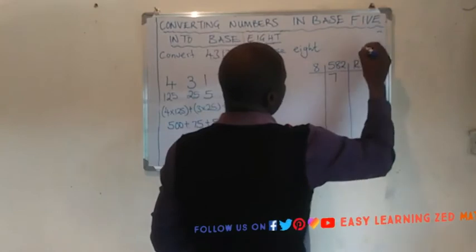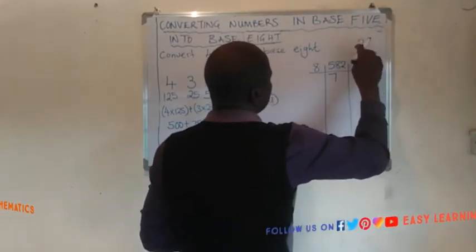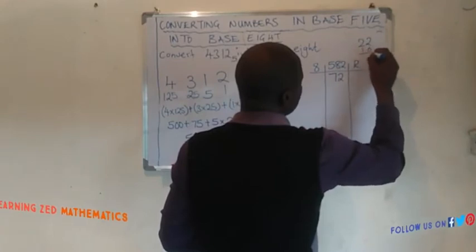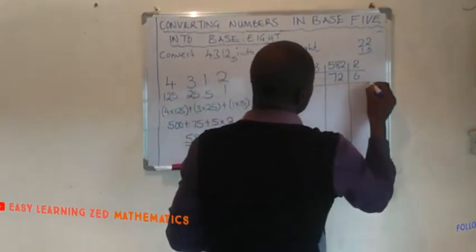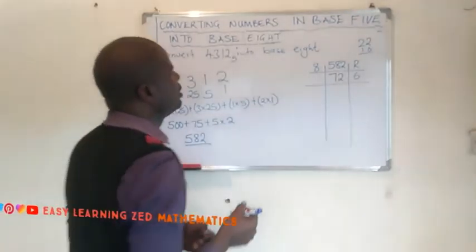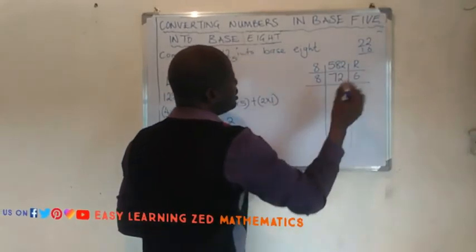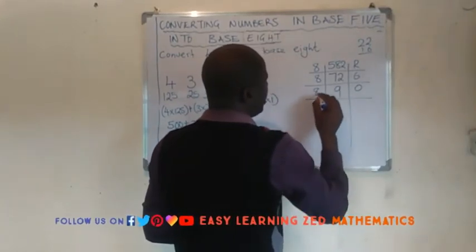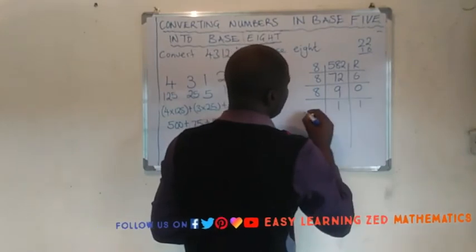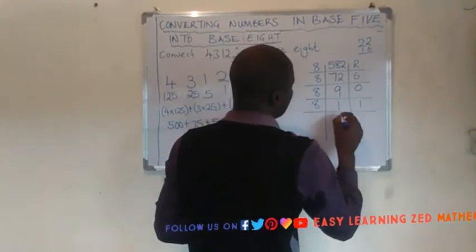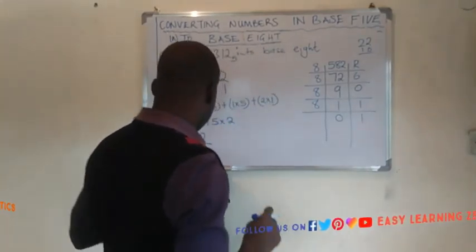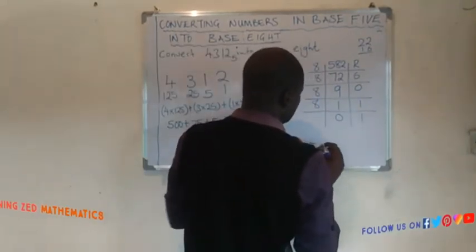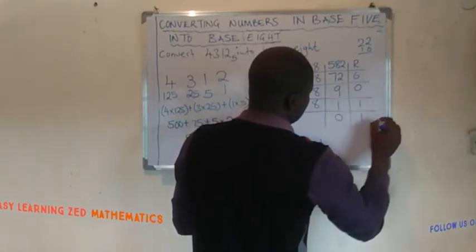8 goes into 582 72 times with remainder 6. Then 8 into 72 goes 9 times with remainder 0. Then 8 into 9 goes 1 time with remainder 1. Then 8 into 1 goes 0 times with remainder 1.